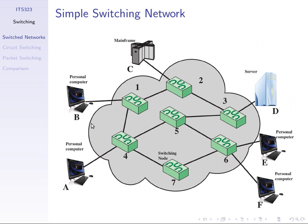If I wanted A to communicate with all other stations without a network, I'd need a link going from A to B, another from A to C, A to D, A to E, and A to F. In practice, having a link from one computer to every other computer is not feasible. So what we do is use a network made up of intermediate devices — these green blocks — called switching nodes.